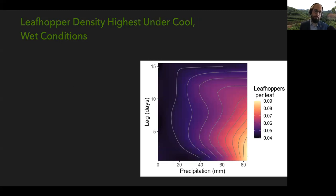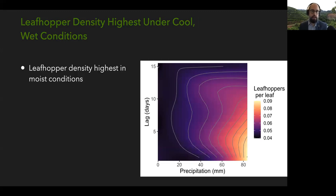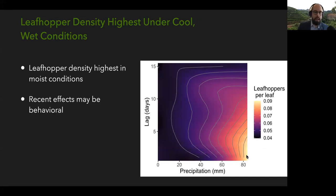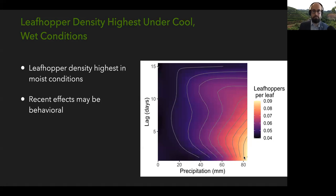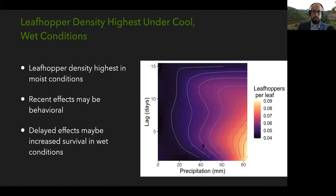Leafhoppers showed the opposite pattern: their density was highest under cool and wet conditions. The highest leafhopper density occurred at the highest precipitation we measured. These recent effects are likely behavioral — I can't imagine that leafhopper populations would really increase just overnight due to high precipitation. More likely, there were more leafhoppers on the young leaves I was counting. This is still relevant because those are the leaves being harvested. There are also some delayed effects of precipitation — maybe there's increased survival at higher precipitations.